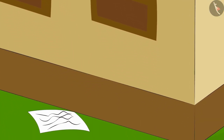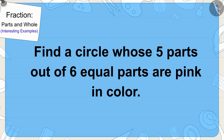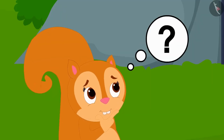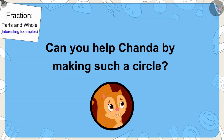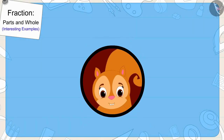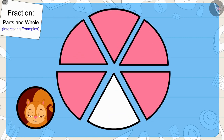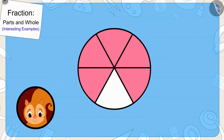Now Chanda found her last clue near Golu's house. It was written in that clue that she has to find a circle whose five parts out of six equal parts are pink in color. Chanda does not know what this circle will look like. Can you help Chanda by making such a circle? You can find the answer by stopping the video. Well done children! You have made it perfectly. There are six equal parts here and five of them are pink.